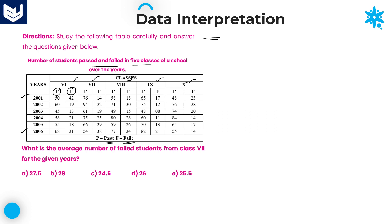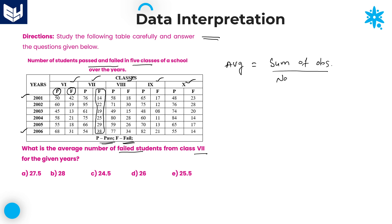Read the first question: What is the average number of failed students from class 7 for the given years? Class 7 failed students — we are talking about the average value. In general, average is equal to sum of observations divided by number of observations.